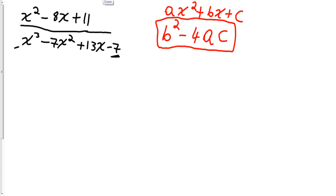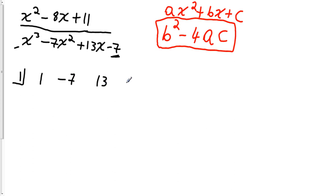In the previous video, I mentioned a trick: by adding up all the coefficients, you can tell whether or not 1 is a zero of your polynomial. The first coefficient is 1, minus 7 gives negative 6, plus 13 gives 7, and minus 7 gives 0. So the coefficients do add up to 0, meaning x minus 1 is a factor of this denominator. I put in the coefficients of the denominator — 1, negative 7, 13, and negative 7 — and proceed with synthetic division.